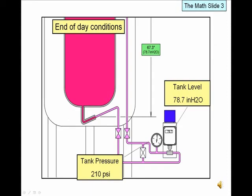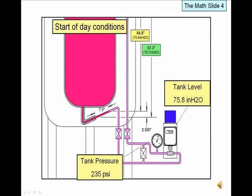To recap: the starting conditions, or the end of the day, had a tank pressure of 210 PSIG and an indicated level of 78.7 inches of water. The ending condition, or the start of the next day, saw pressure rise to 235 PSIG and the level drop to 75.8 inches of water. This drop was due to the level rising in the high phase line trap by 2.5 inches.